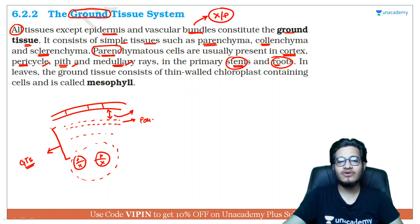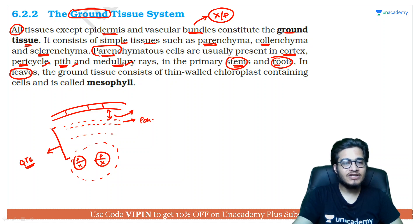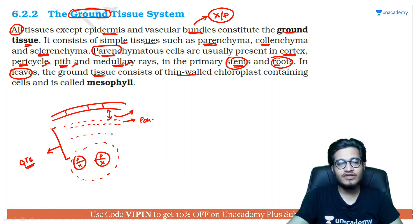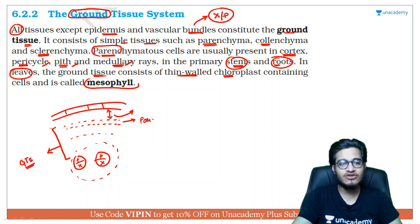In leaves, the ground tissue system consists of thin-walled, chloroplast-containing cells called mesophyll.